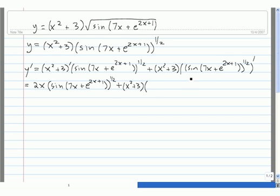Now to differentiate this piece, we notice that overall we have a power — we have sine of 7x plus e to the 2x plus 1, all being raised to the 1/2 power. To differentiate that using the chain rule, we have 1/2.